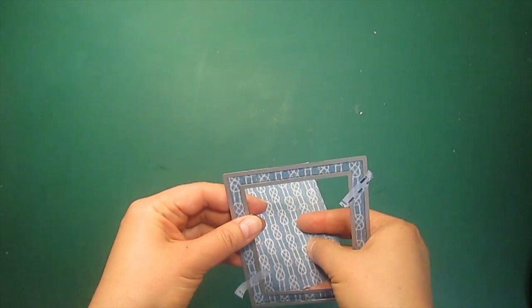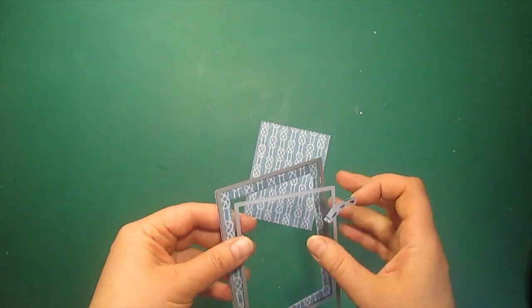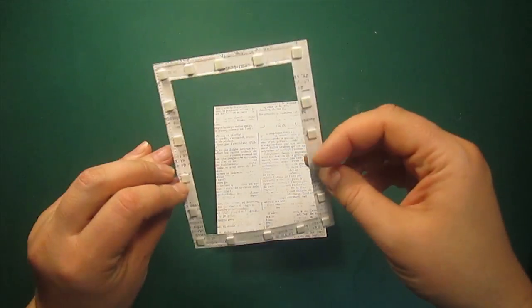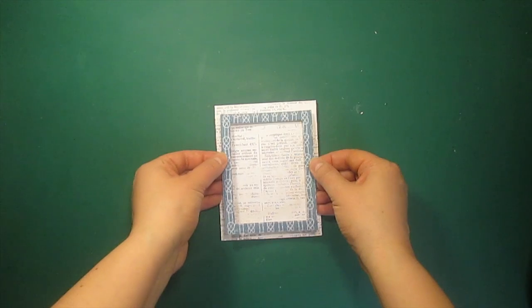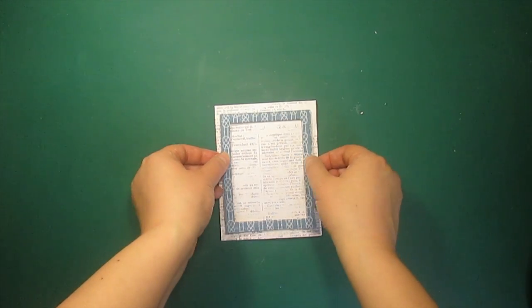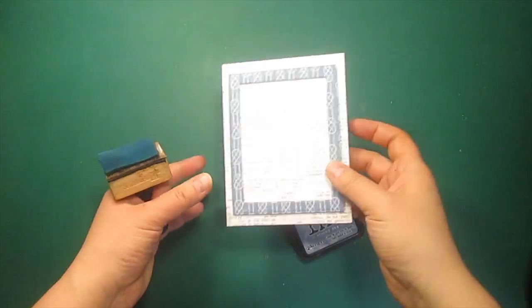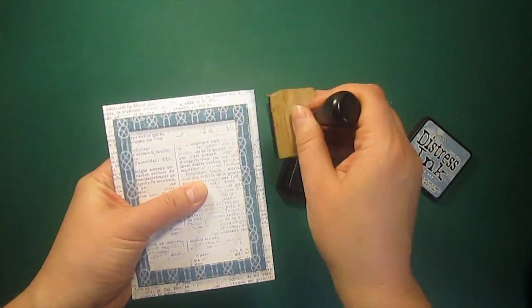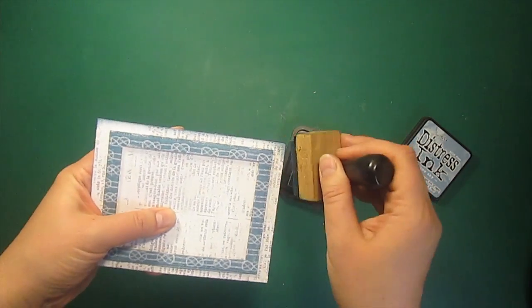I have die cut a frame with the two dies from Pinpoint Rectangle Layers by Memory Box. And I'm adhering the frame to the card front with the foam squares. Now I'm going to apply Stormy Sky Distress ink all over the edges as well as on the inside of the frame.